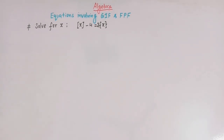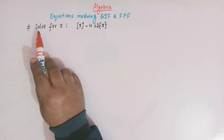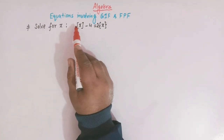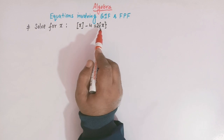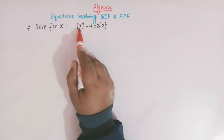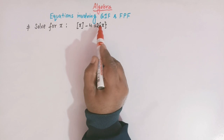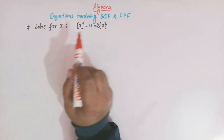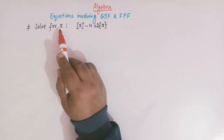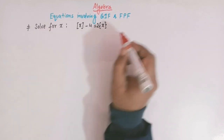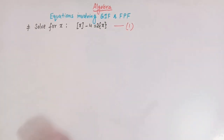Hello viewers. In today's class we are going to discuss an important topic from algebra. Here we are going to solve some equations involving the greatest integer function and fractional part function. The first problem: we have to solve for x when the greatest integer of x minus 4 is equal to 2 times the fractional part of x. We call this equation number 1.